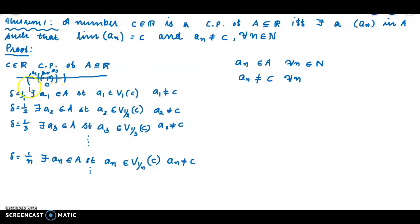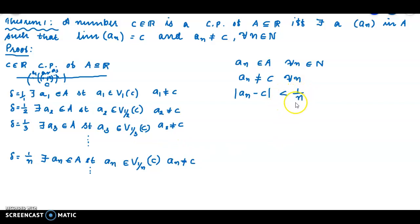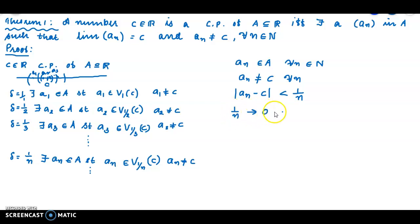The distance |aₙ - c| is less than delta, which equals 1/n, since aₙ is in V₁/ₙ(c). So modulus of aₙ minus c is less than 1/n. And we know that 1/n tends to 0 as n tends to infinity.